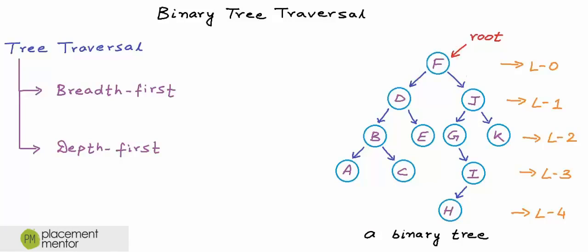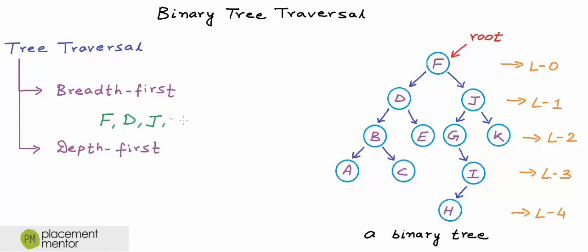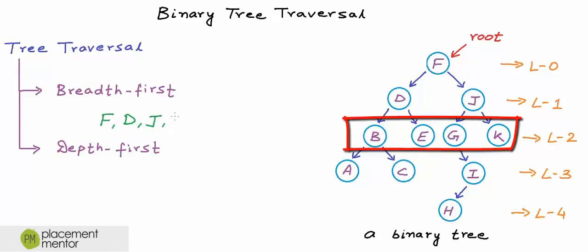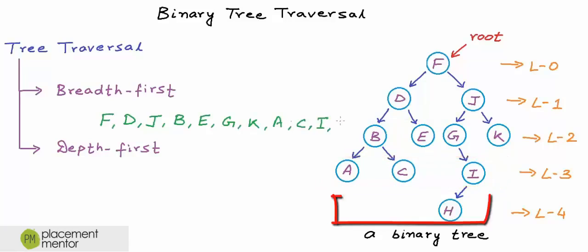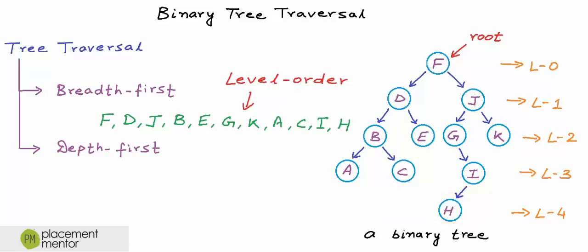In the breadth first approach we can start at level 0 — there would be only one node at level 0, the root node, so we visit the root node F. Now level 0 is done. We go to level 1 and visit nodes from left to right: D and then J. Then we go to level 2: B, E, G, and K. Then level 3: A, C, and I. And finally level 4. This kind of breadth first traversal in the case of trees is called level order traversal, and we go level by level from left to right.